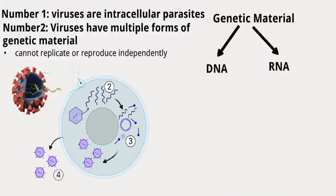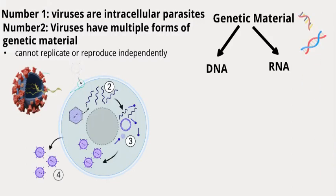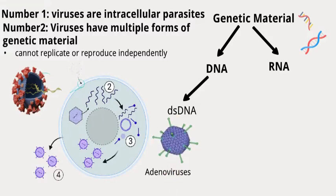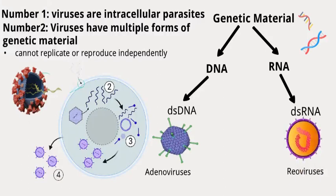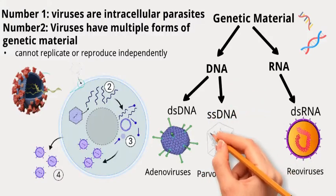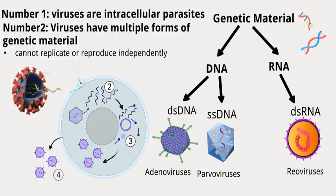Number two: viruses have multiple forms of genetic material. The genetic material of viruses carries either DNA or RNA, but not both. It can be single-stranded or double-stranded. Double-stranded DNA, or dsDNA, like herpes viruses and adenoviruses, has a double-stranded DNA genome — two complementary DNA strands. Double-stranded RNA, or dsRNA, such as reoviruses, carry their genetic material as double-stranded RNA, forming a double helix similar to DNA.